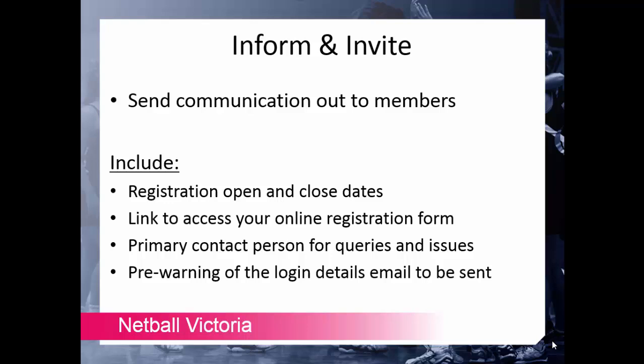Once you've got all your member details updated, the next step is to inform and invite your members. You will need to inform all of your members about the registration process for 2016 — this may include whether registration will be online or offline, what date they need to be registered by, who the primary contact from your club or association is, and any other details. I would recommend communicating via email, website, or social media. Once you've informed your members you will need to invite them to complete their registrations — providing them with a link to access the form and outlining the steps they need to complete successfully.